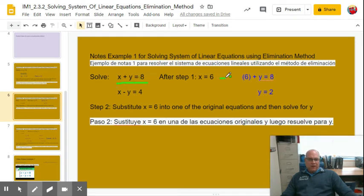And so you see over here, I substituted the 6 for the x. So 6 replaced x. 6 plus y equals 8. Subtract 6 from both sides. We get y equals 2.